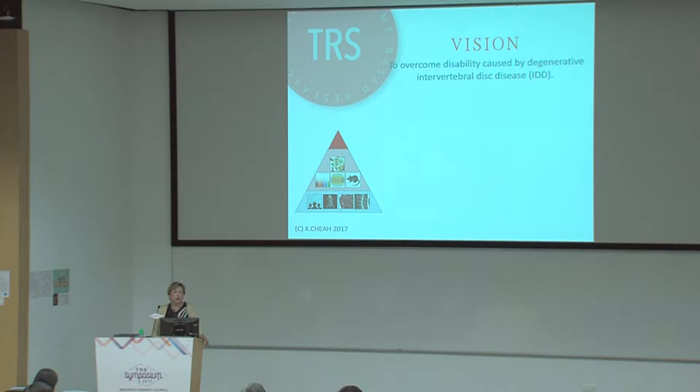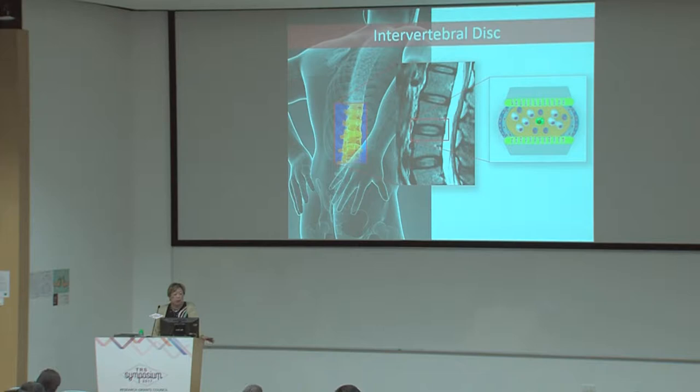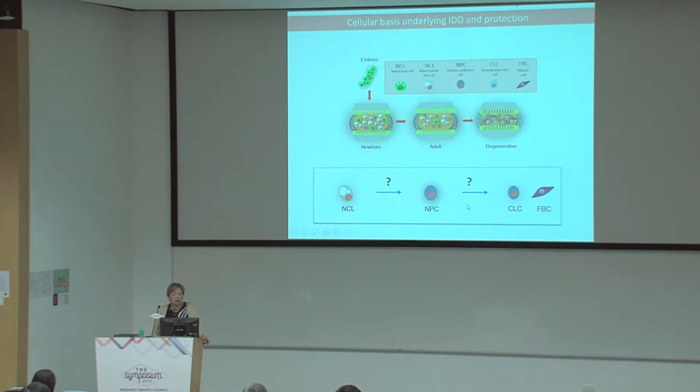Our vision — and I don't claim we can achieve this within five years — is to contribute to overcoming disability caused by intervertebral disc degeneration. To do that, we need to understand the function of the disc, why it degenerates, and the relative propensity for developing disc degeneration. So we aim to discover genetic factors contributing to disc degeneration, understand how the disc works, and lay the foundation for future interventions.